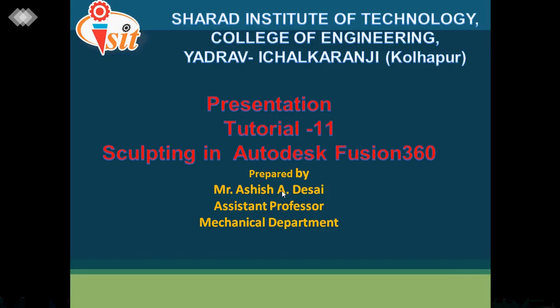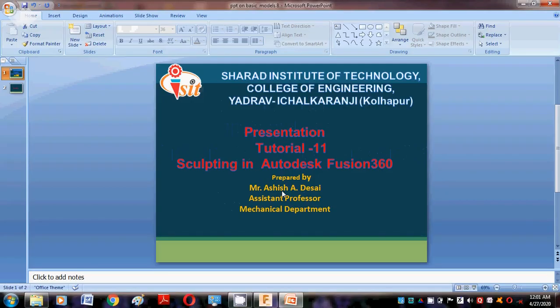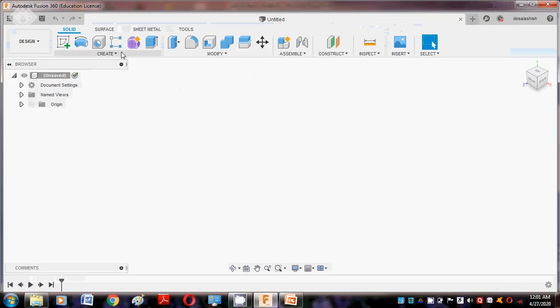Good morning, myself Ashish Desai, assistant professor, mechanical department. Today I am presenting Sculpting in Autodesk Fusion 360. This is total number 11, part first. Here we discuss the work piece which is called Sculpting in Moment. First of all we go to Fusion and discuss the different types of creating form — this is actually freeform, so according to your requirement you can change the forms.